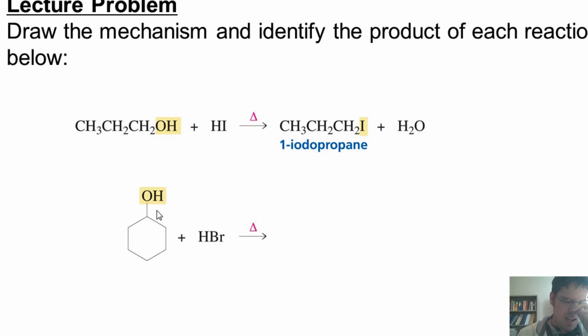Here's another example. As before, the lone pairs on the oxygen come and form a bond with this hydrogen kicking off the bromide, giving me a protonated H2O attached to this cyclohexane. In this case, that group could leave SN1 style or might be kicked off by an attacking bromide SN2 style. In either case, it gives me this product, cyclohexyl bromide.